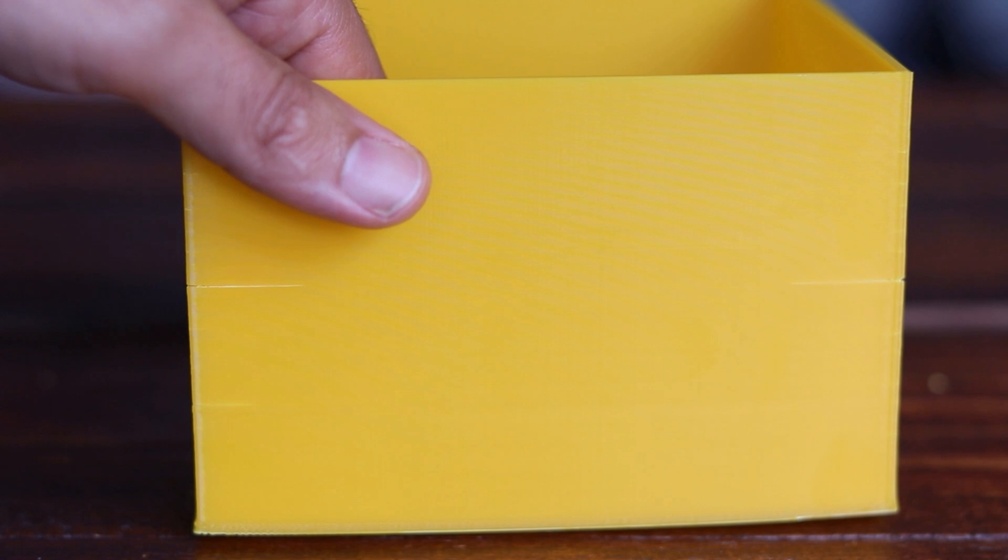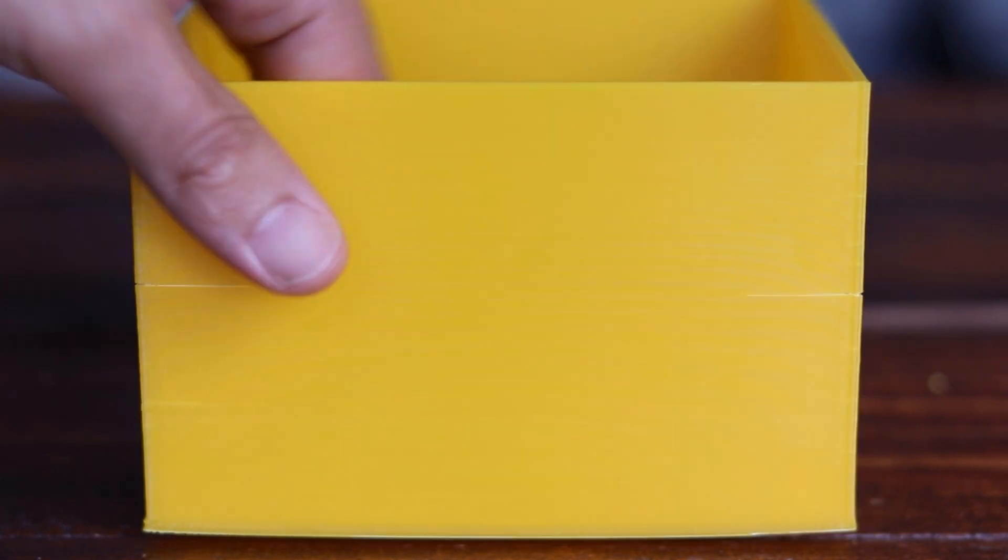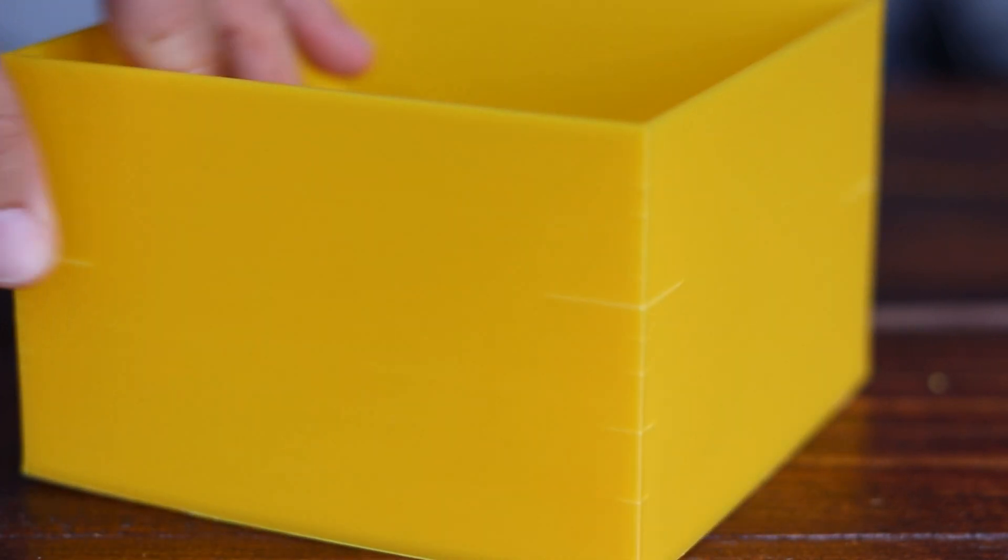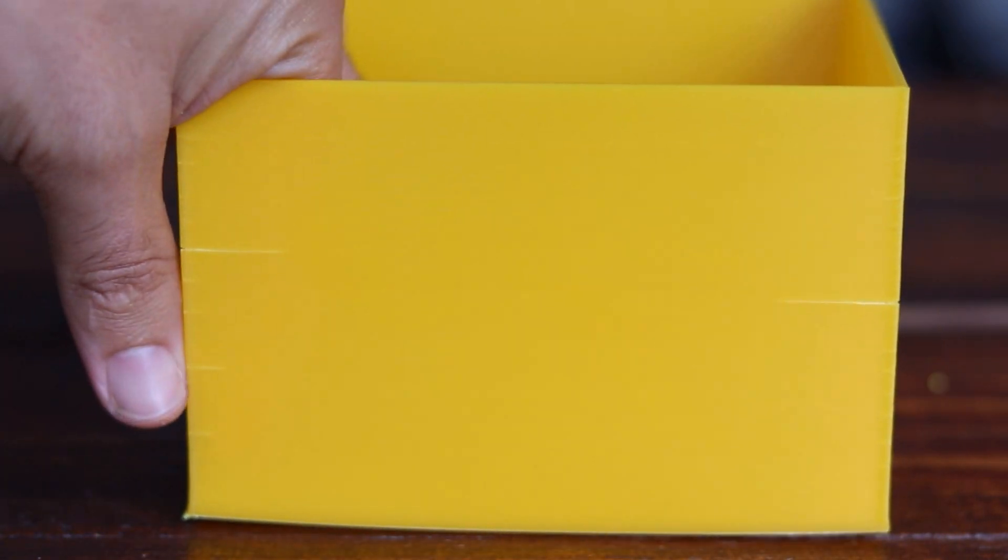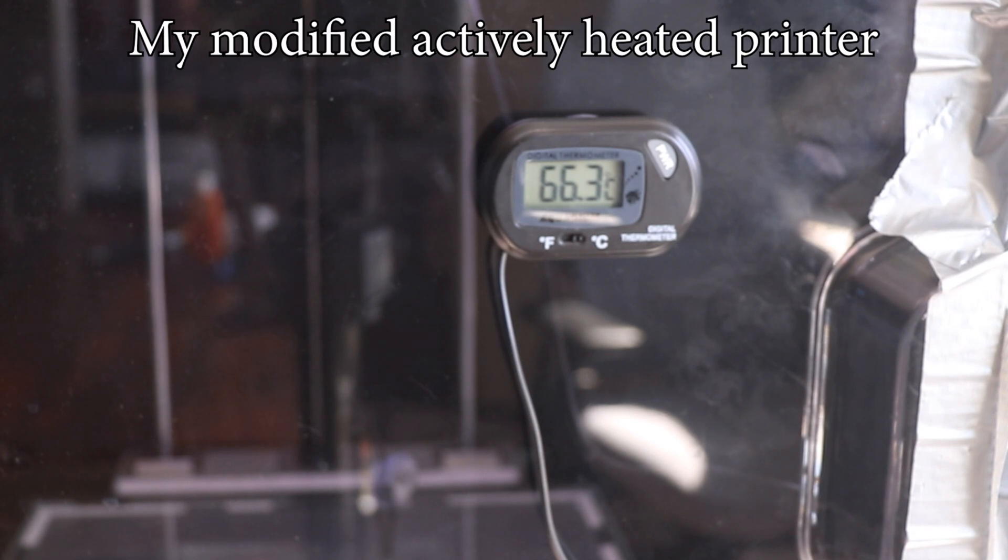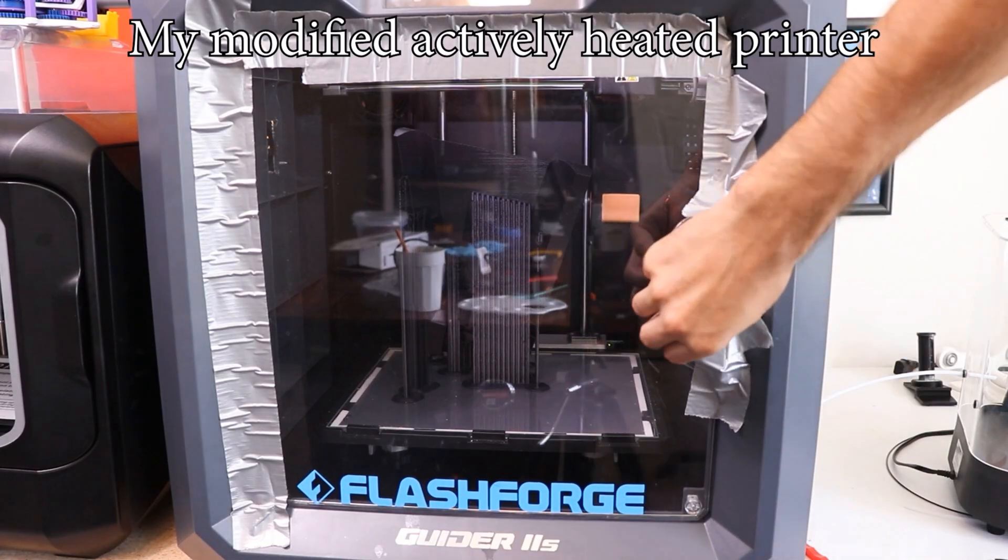The larger the ABS part and the more dense it is, the harder it will be for you to print without a high ambient air temperature. If you're printing a very large, very dense part, it's likely you're going to have a lot of difficulty if you don't have active heating for your printer, getting the ambient air temperatures closer to 60 degrees Celsius, and those types of printers are not nearly as common.